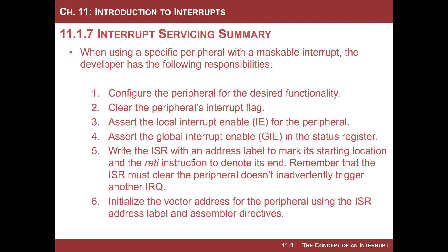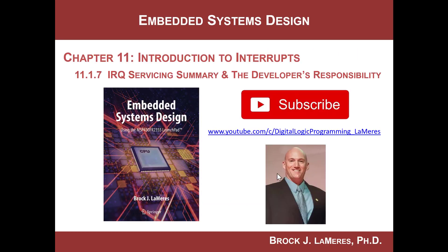Now that you have your interrupt service routine, you need to put its starting address in the vector table associated with your peripheral. You initialize the vector address using assembler directives: use .sect to go to the hard-coded address for the vector associated with the peripheral — given by the linker file — and then use .short followed by the label to drop in the starting address of the interrupt service routine. That's the overview of what happens during an interrupt and what your responsibility is as the developer. Support my channel by subscribing, and see ya.